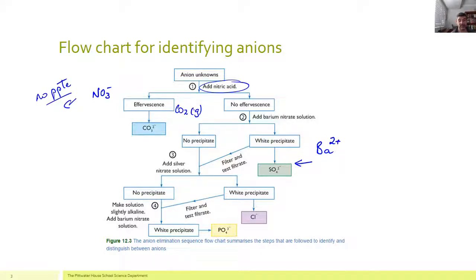So we've only got two left. The addition of silver nitrate is going to precipitate a white precipitate of silver chloride if chloride ions are present, but not if the phosphate ions are present.